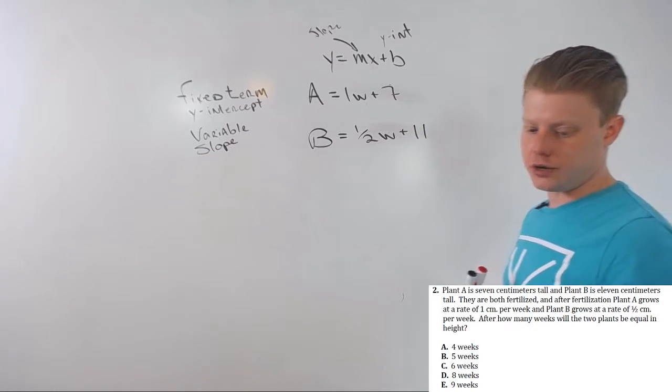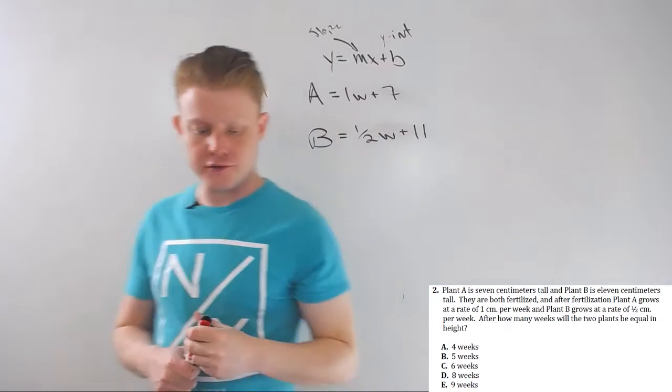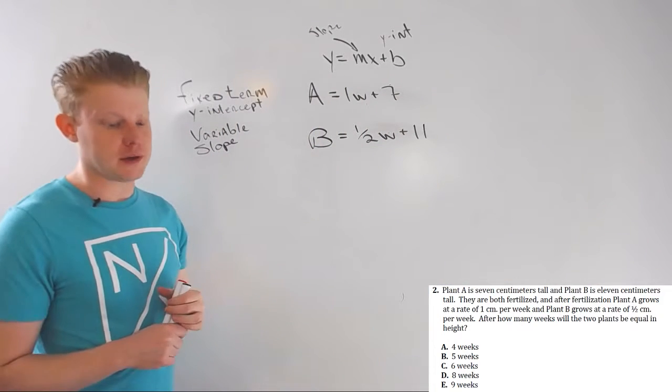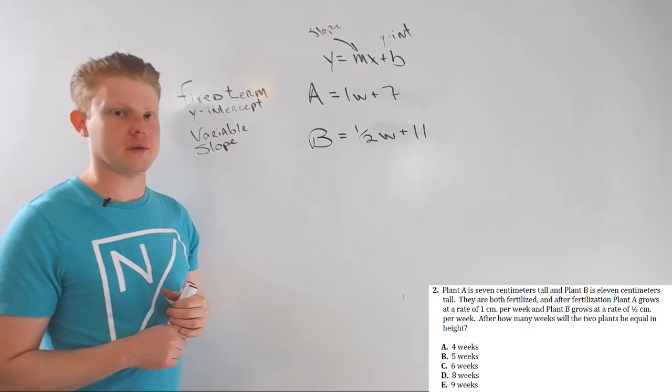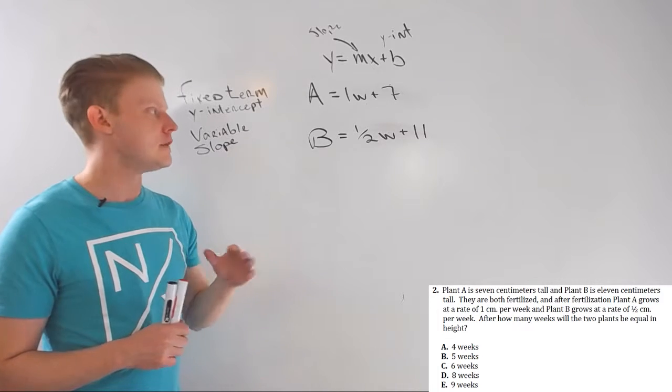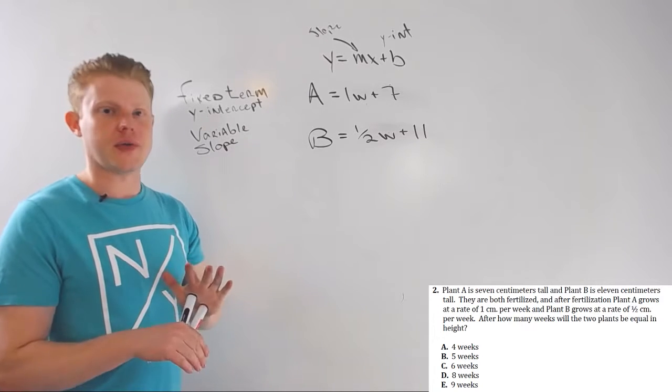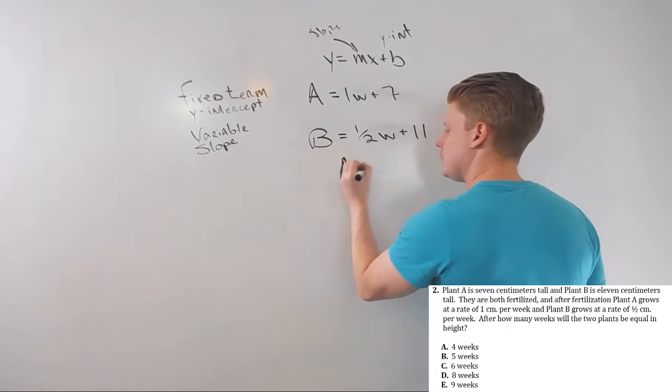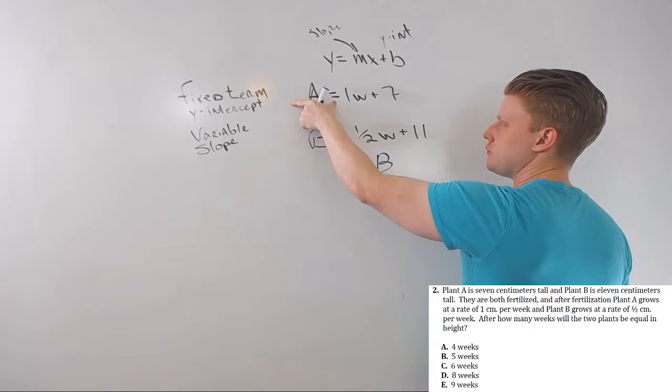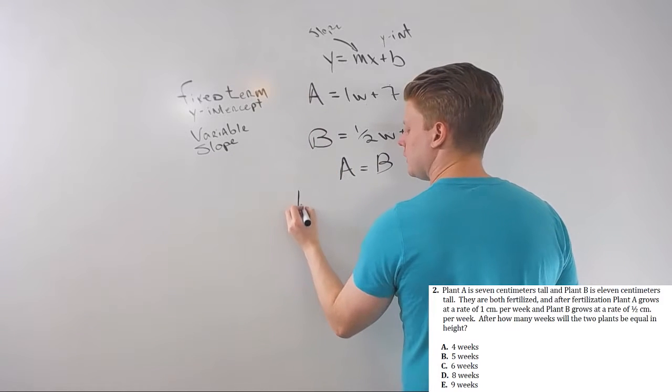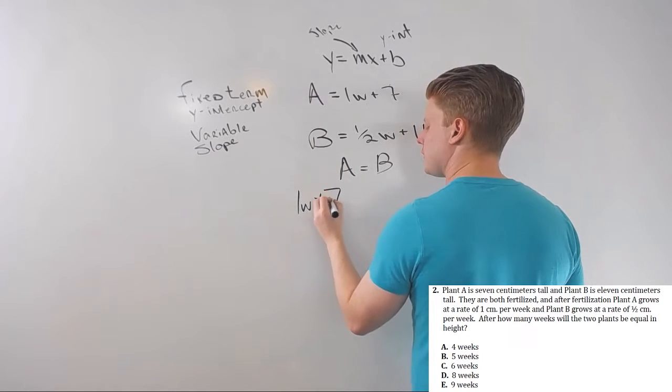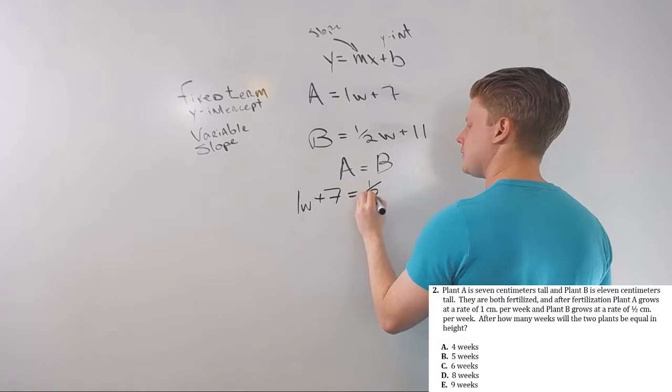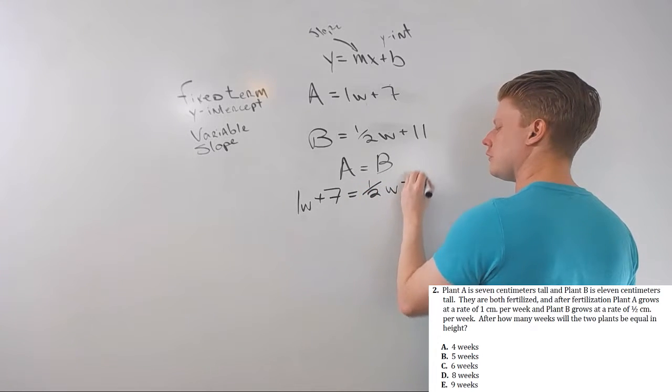Here's the second real trick: after how many weeks will the two plants be equal in height? Equal, that means we're looking for when A equals B. Well I can just say, well that's going to be when 1w + 7 is equal to 1/2w + 11 because they will be equal in height.